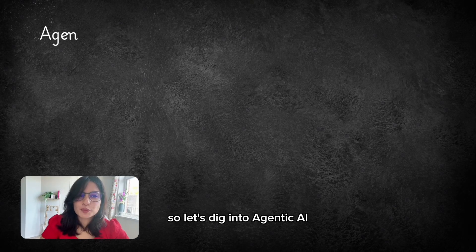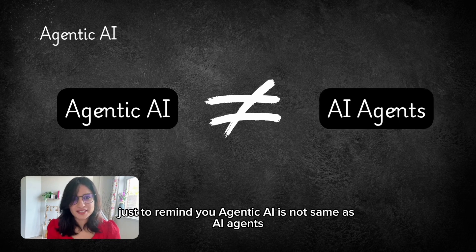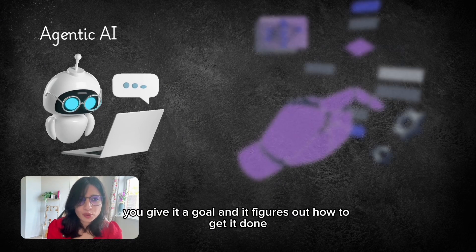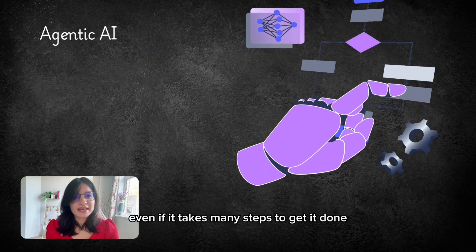So let's dig into Agentic AI. Just to remind you, Agentic AI is not same as AI agents. So Agentic AI acts like a smart teammate. You give it a goal and it figures out how to get it done. Even if it takes many steps to get it done.